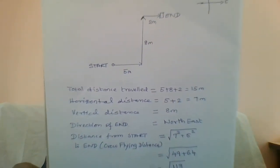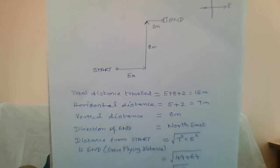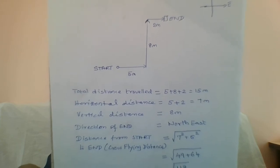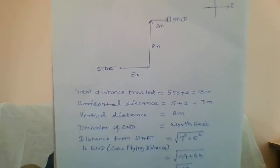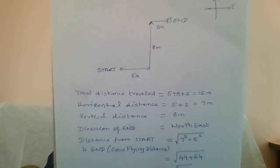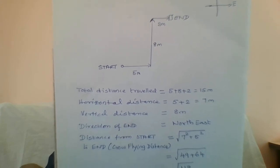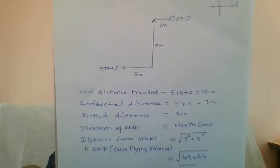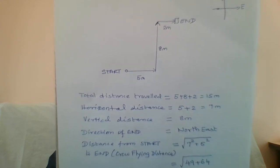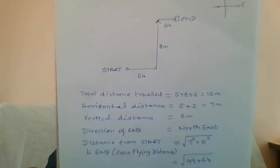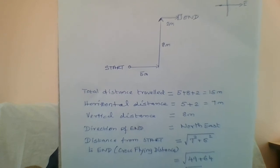Yeah. Here, this is the problem where a boy Ramesh walks five meters towards East and goes eight meters towards North. That is, he takes a left turn and goes eight meters, walks eight meters, and then he takes a right turn. Again, he walks two meters.